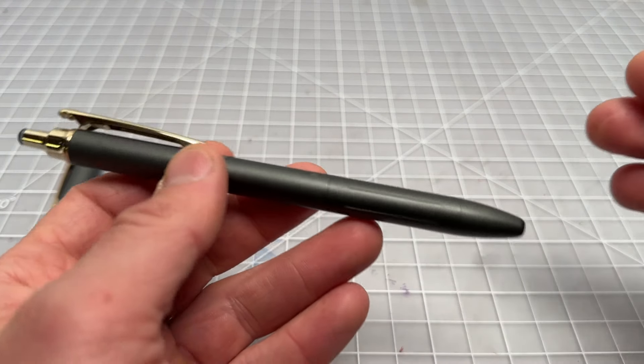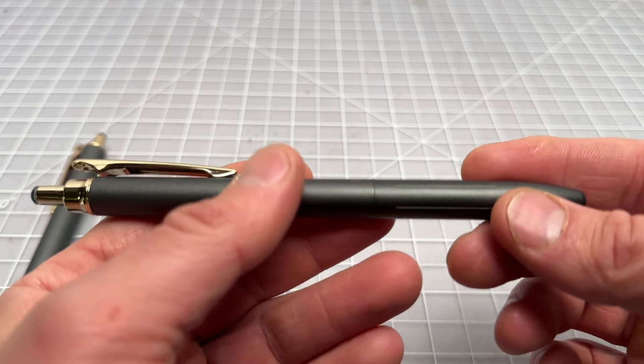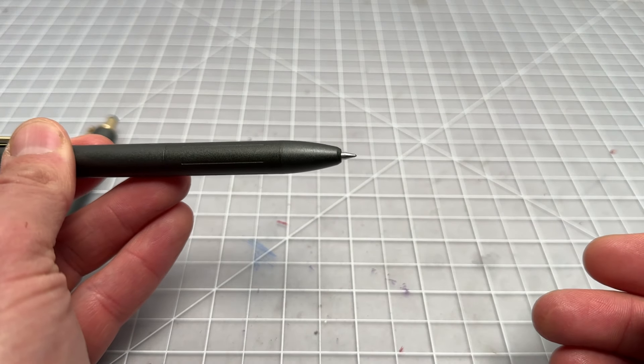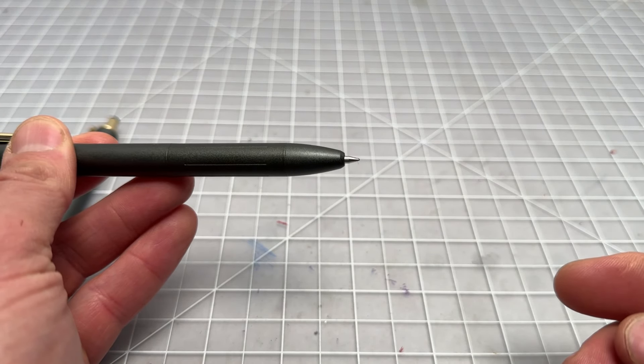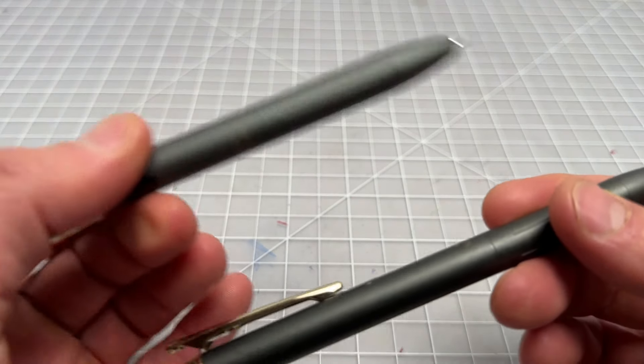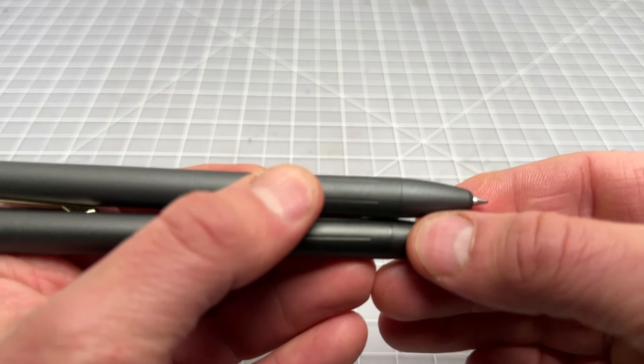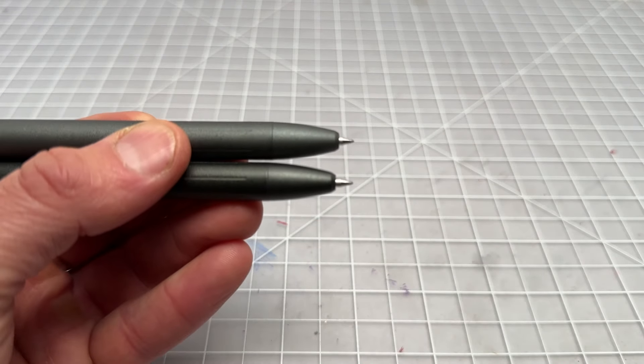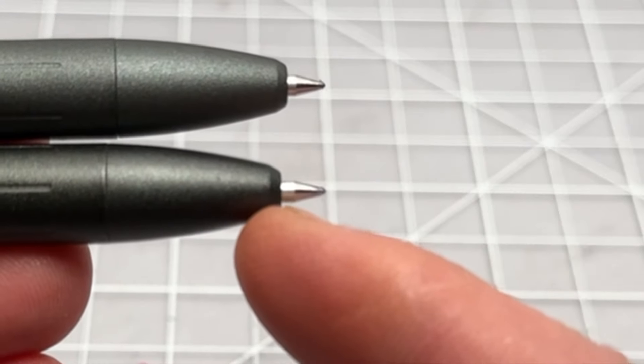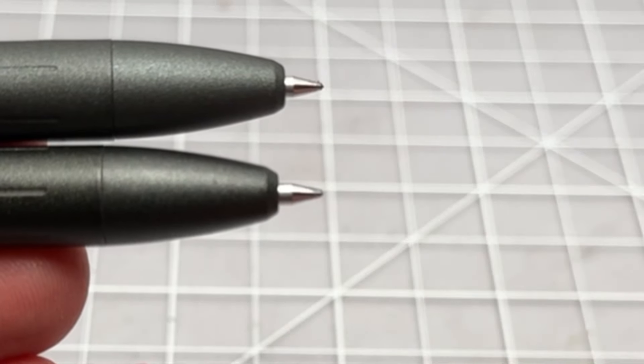Next up, the writing tip on the pen. Zebra said they pushed it out by 0.5 millimeters so it's barely distinguishable. When you click the pen out you can look at the extension of the writing tip. Let's look at it compared to the original which uses the same refill and we'll try to line everything up.